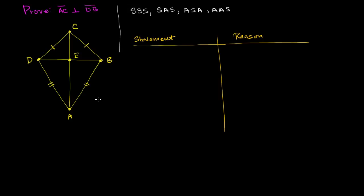The strategy I'm going to use: right off the bat, it seems like I can prove that triangle CDA is congruent to triangle CBA based on side-side-side. Once I establish congruency, I can start to say angles are the same. So let's write it out. We have segment CD equal to segment CB — that is given. We also know that DA is equal to BA — also given.